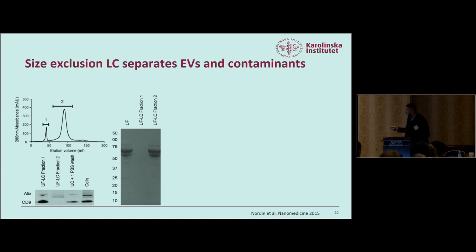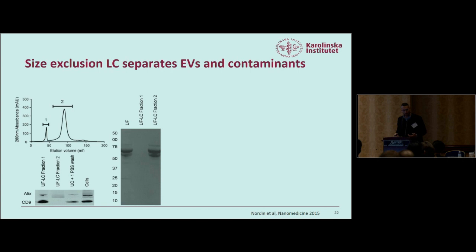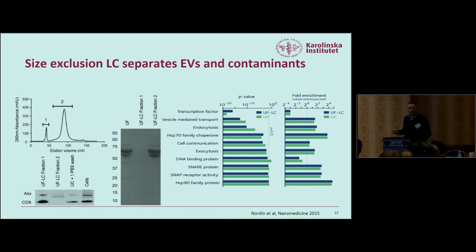That's why we introduced a size exclusion step in liquid chromatography. After filtration, you get a first protein peak containing all the exosomal markers, followed by a massive second peak containing contaminating proteins and RNAs. By collecting only fraction one, we remove all contaminating protein and obtain clean EVs. Proteomics confirms the EV proteome from a pure LC prep is very similar to that from a pure ultracentrifugation prep.